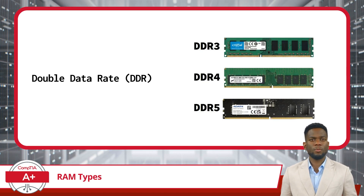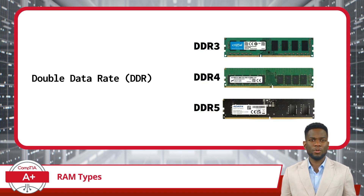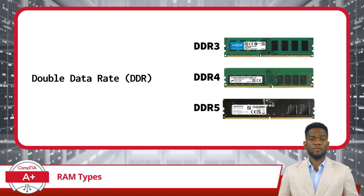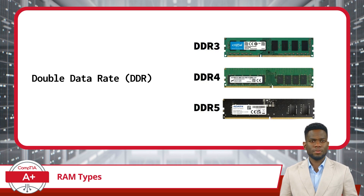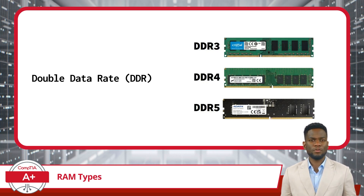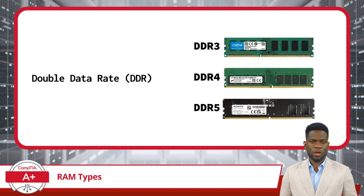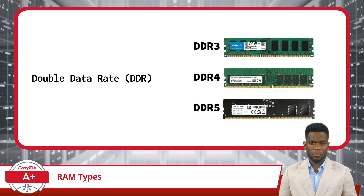DDR3 RAM was a prevalent standard known for its commendable performance and efficiency, catering to various computing needs from around 2007 to 2015. However, with the advancement of technology, DDR4 emerged around 2014, offering higher data transfer rates, lower power consumption, and increased memory capacity support. DDR4 gradually replaced DDR3 as the mainstream memory standard.